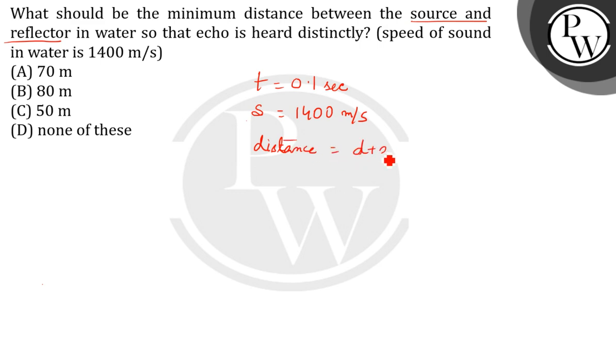We know that speed equals distance divided by time. So 1400 equals 2d divided by 0.1, therefore d comes out to be 70 meters. The correct answer is option A, 70 meters. Thank you.